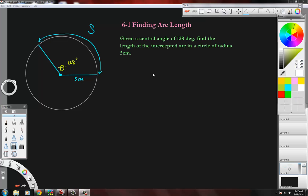Good morning, we're going to find the arc length in chapter six. The problem says: given a central angle of 128 degrees, find the length of the intercepted arc in a circle of radius five centimeters. I have everything drawn here.